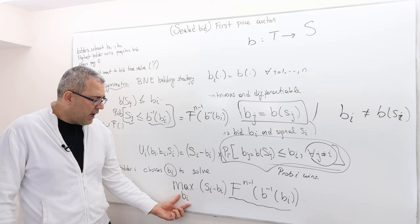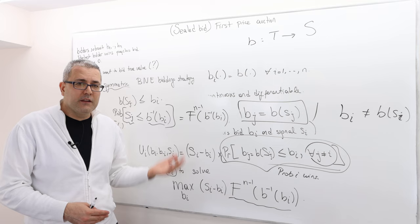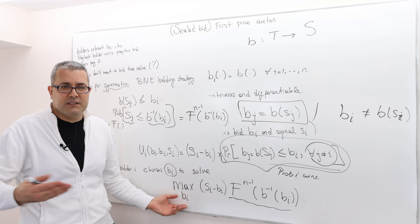To find the payoff-maximizing or best-response strategy, we take the first-order condition: take the derivative of the expected payoff with respect to B_I, set it equal to zero, and solve for B_I.